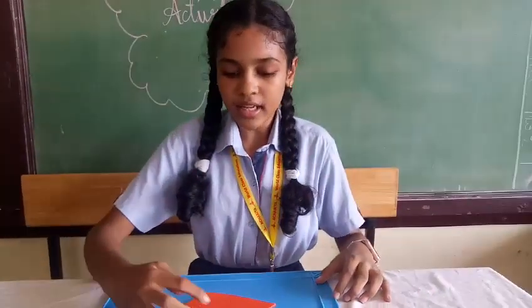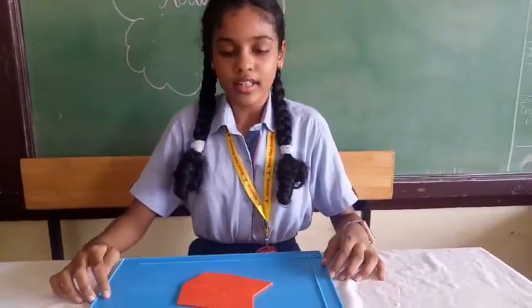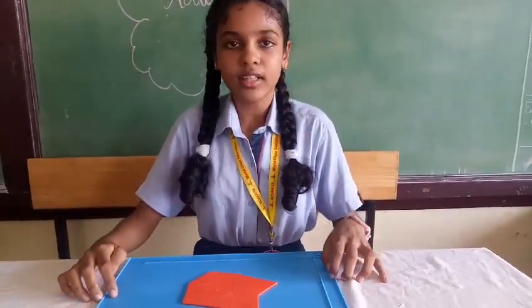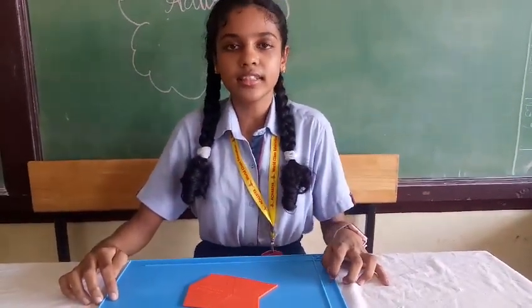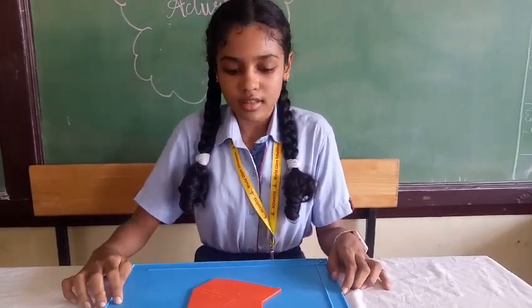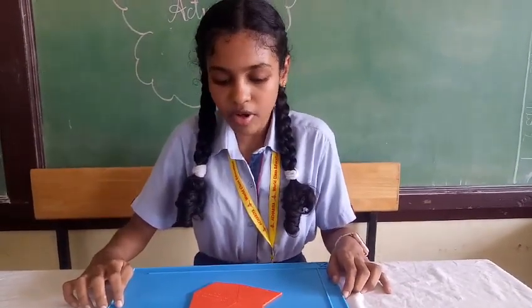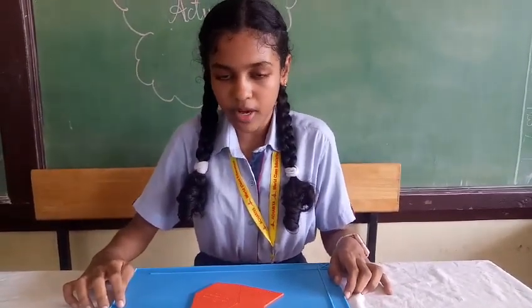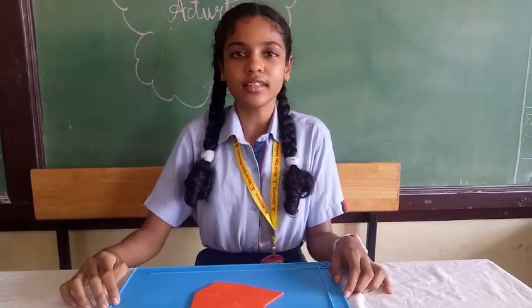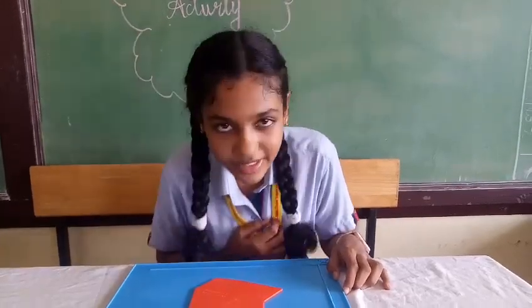Now, the angle around the center of the circle is 360 degrees. Therefore, the sum of angles of a quadrilateral is 360 degrees. Thank you.